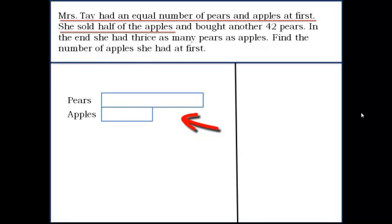So we've taken that. So half of the apples have been sold and she bought another 42 pears. Now, on the pear side, we extend the model to show that she had bought 42 more apples.